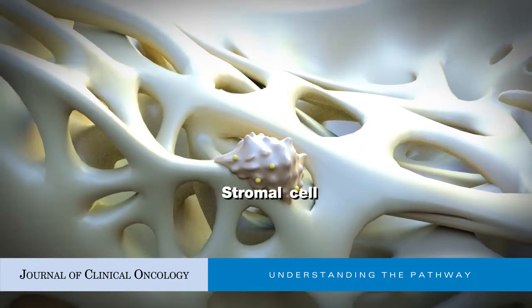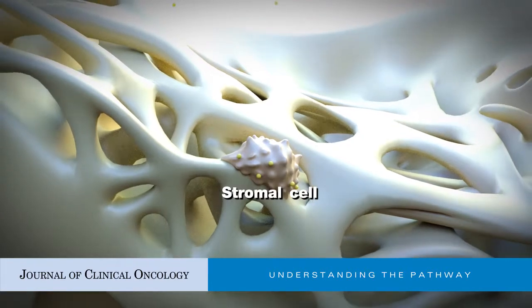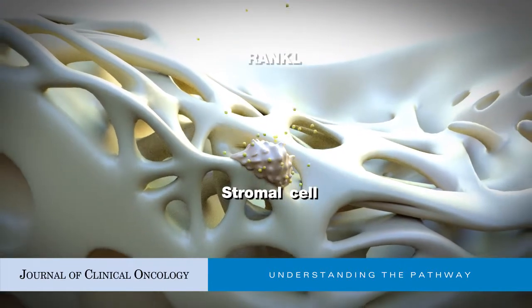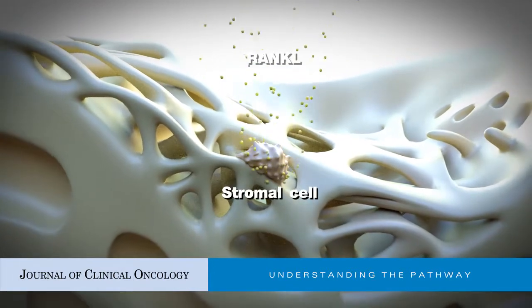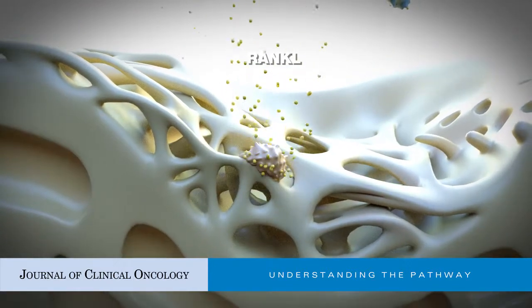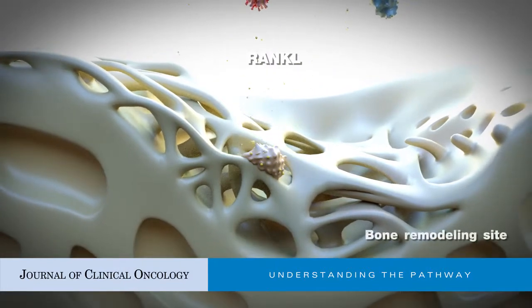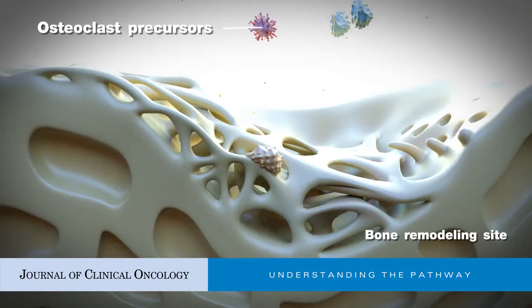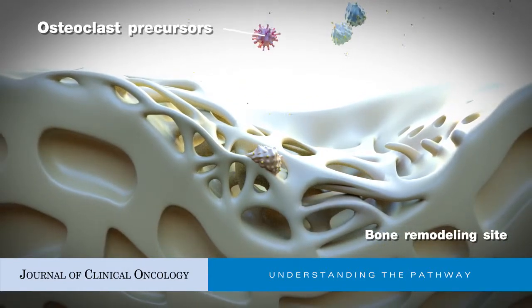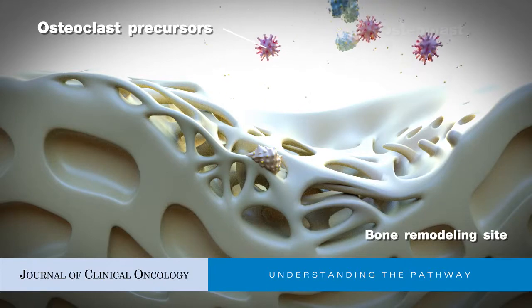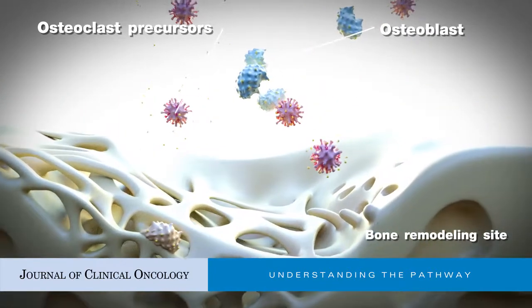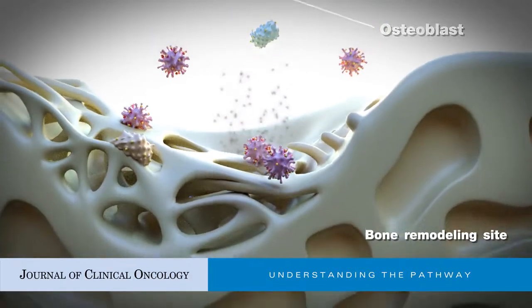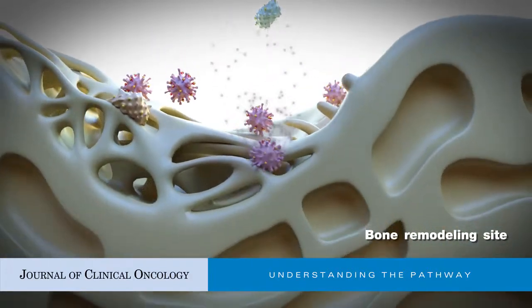Continuous bone remodeling is essential for skeletal integrity and strength. Bone homeostasis describes the scenario when resorption and rebuilding are appropriately balanced. Osteoclasts and osteoblasts are specialized cells that exist within the bone microenvironment and display a yin-and-yang type of relationship, with osteoclasts breaking down bone while osteoblasts lay new matrix in response to cytokines and hormones.